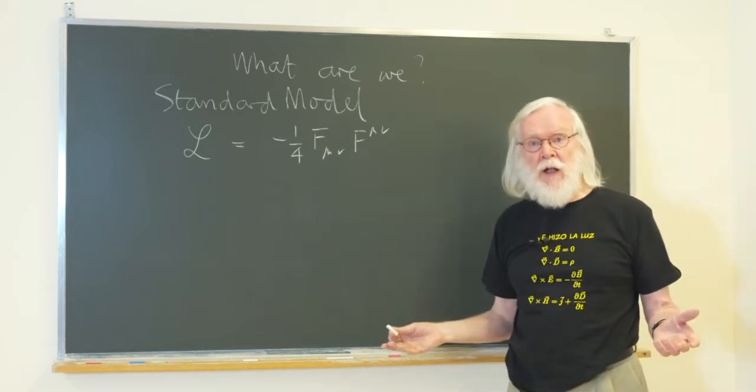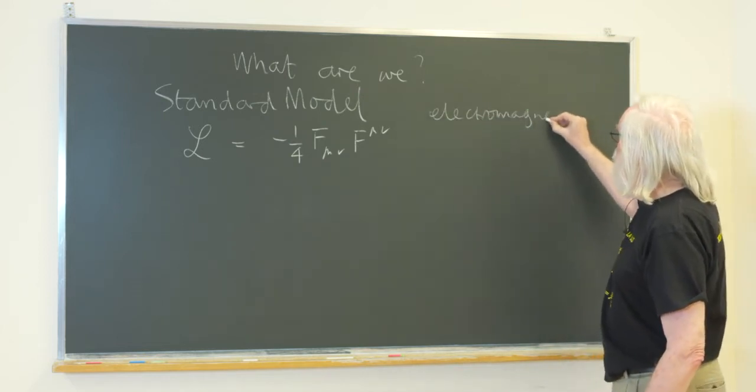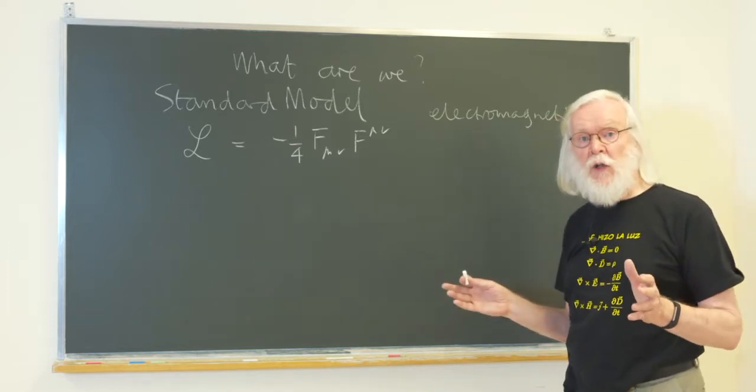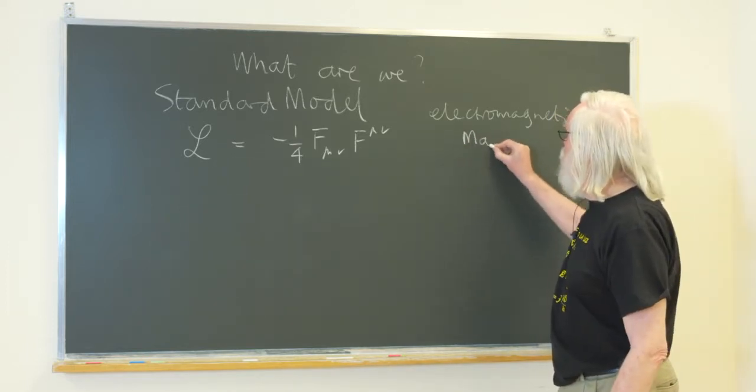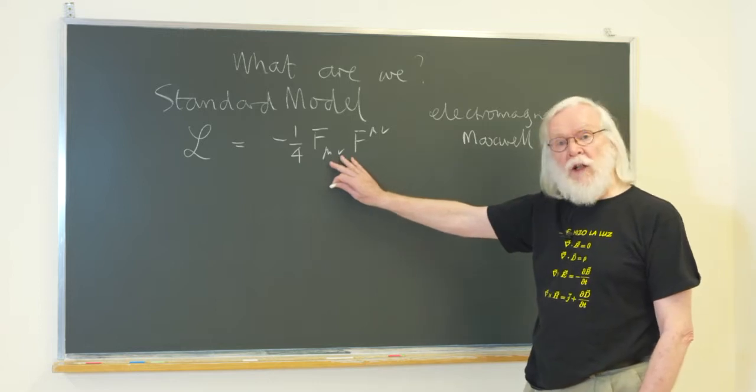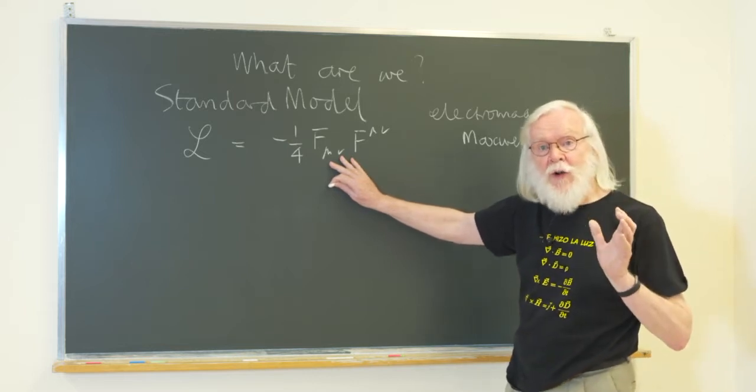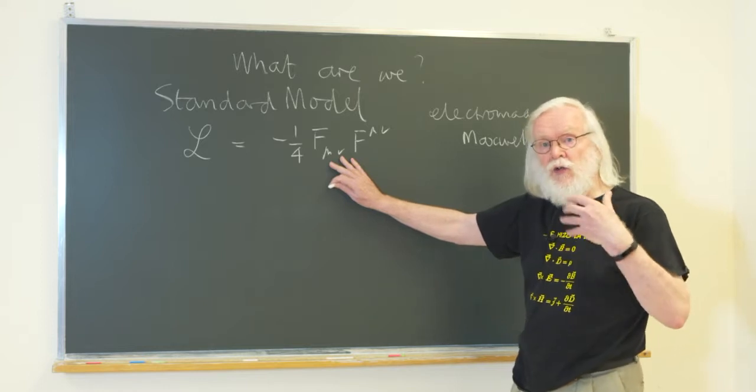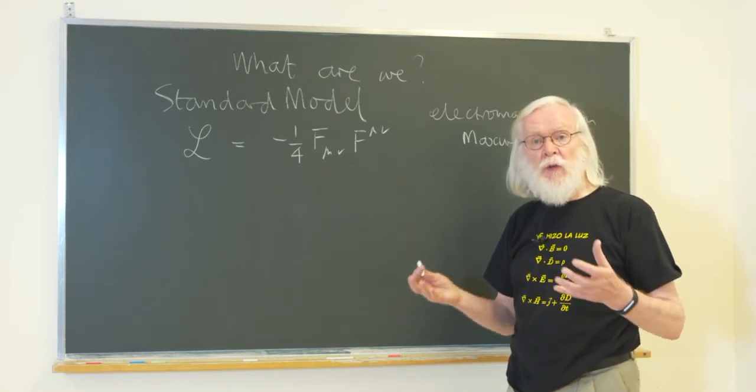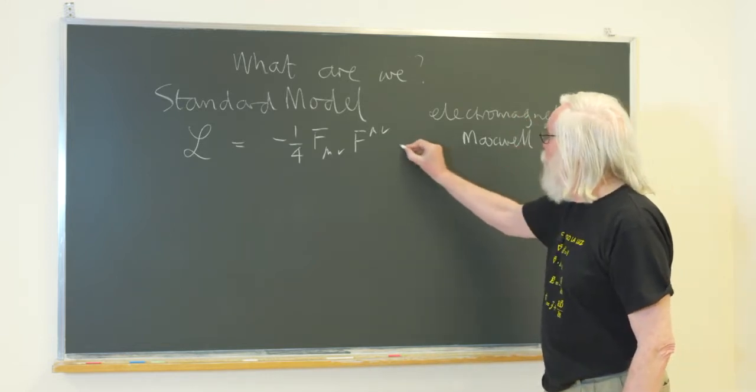What interactions do we know about? We know about electromagnetism. Electromagnetism was first written down in a unified way by Maxwell in the 1860s. This piece of our equation describes Maxwell's theory of electromagnetism, but it also describes a lot more. It also describes the strong nuclear interactions that hold nuclei together, and the so-called weak interactions that are responsible for forms of radioactive decay. So all these interactions are here.